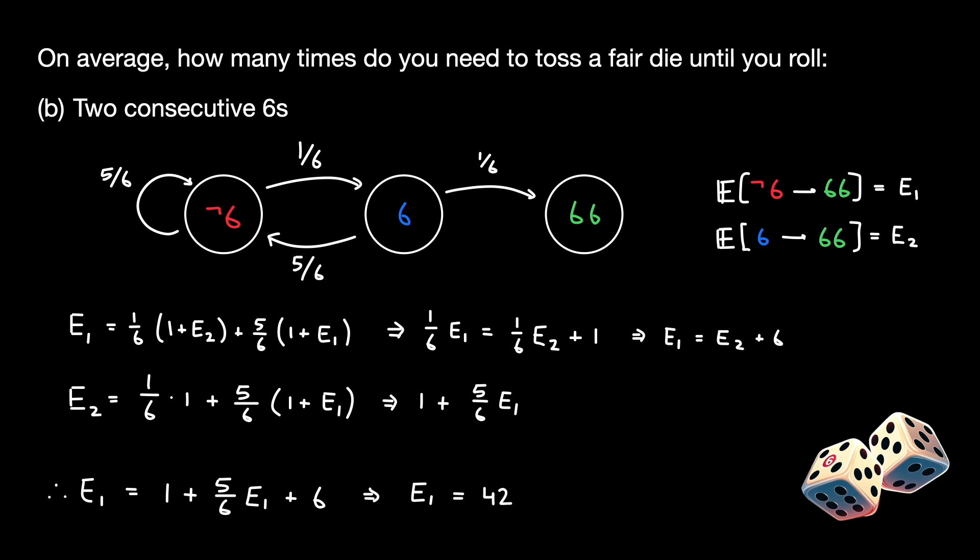As you may have noticed, this is actually greater than 36, which shows that if we roll a single die over and over again, the expected number of tosses to get two consecutive sixes is actually greater than the number of tosses we would need to get two double sixes if we rolled two dice at the same time. Does this answer surprise you? Did you guess 36 as well? Let me know down in the comments below.